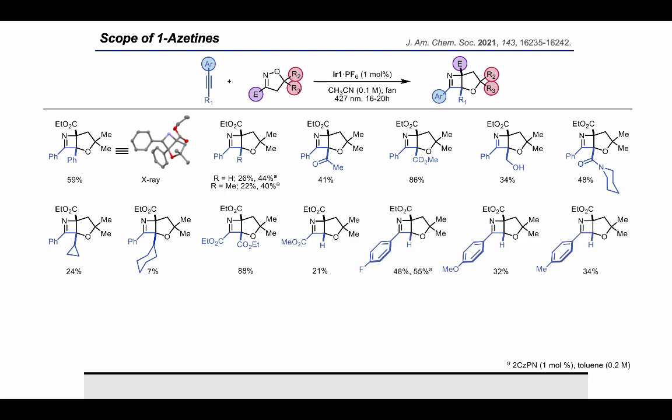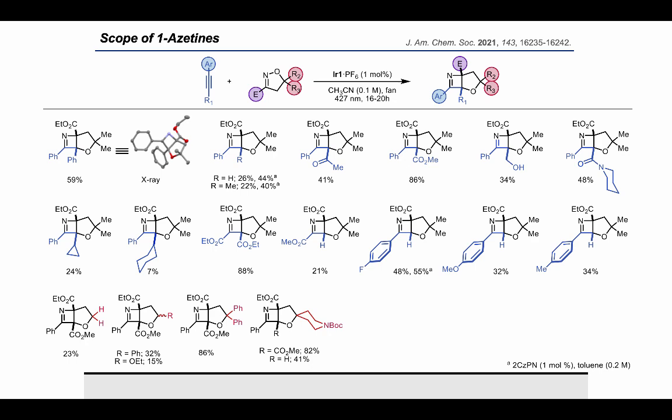We found that electron-withdrawing and donating aryl alkynes were tolerated, with electron-withdrawing para-fluorophenylacetylene being superior. Additionally, for this substrate and two others, we showed that an organic photocatalyst 2CzPN demonstrated increased yields for the transformation, highlighting the potential of utilizing a more cost-effective catalyst for future scale-up applications. Isoxazolines with varying substitution on the backbone were tolerated with an increase in yield for larger substituents. And finally, we were able to show that different electron-withdrawing groups on the isoxazoline were well tolerated by this reaction, with the nitrile group performing exceptionally well, up to 96% yield, and even performing well with alkynes that had previously performed more poorly.